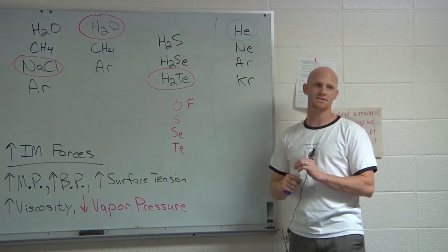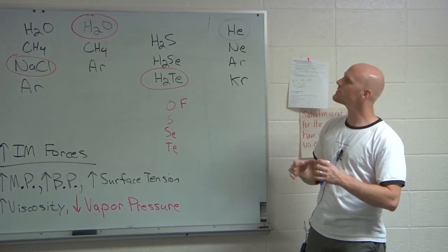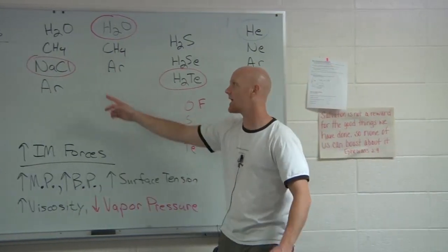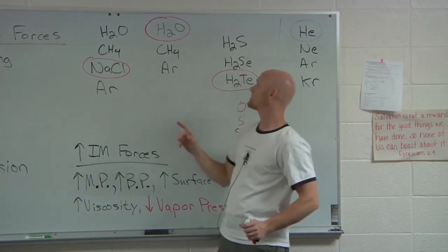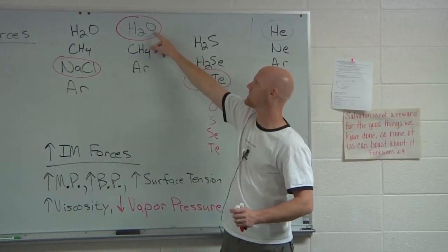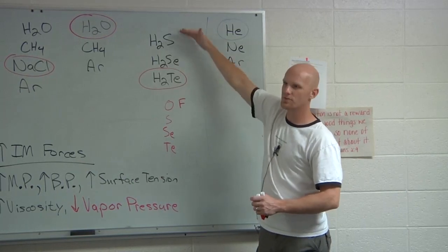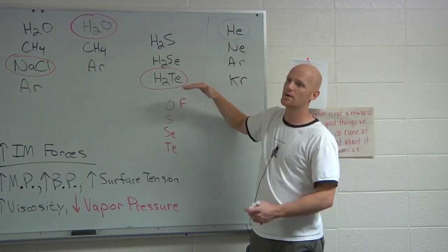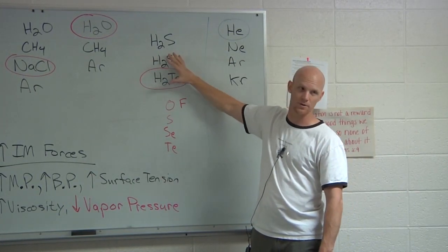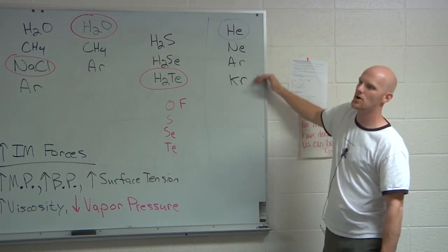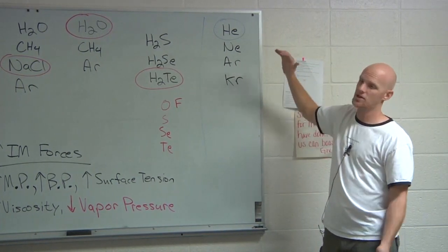Those are all types of questions you might see — I've given you just about every type of comparison they might ask. One example was about hydrogen bonding winning; another was one of those rare cases where London dispersion actually trumped dipole-dipole because of size differences going down a group; and another was all about only London dispersion forces, where it's all about size.